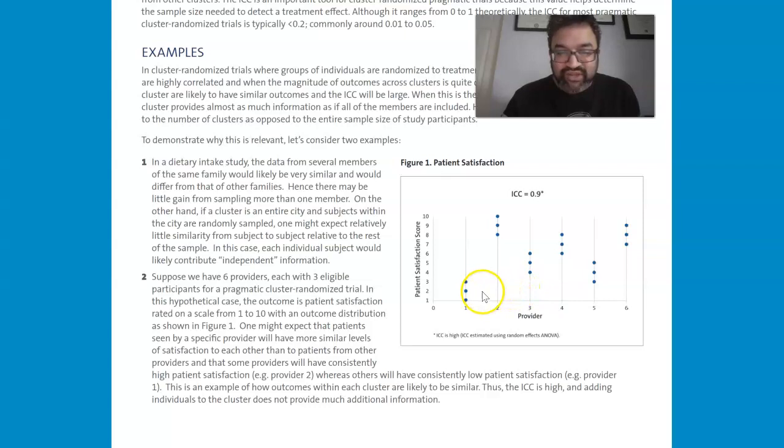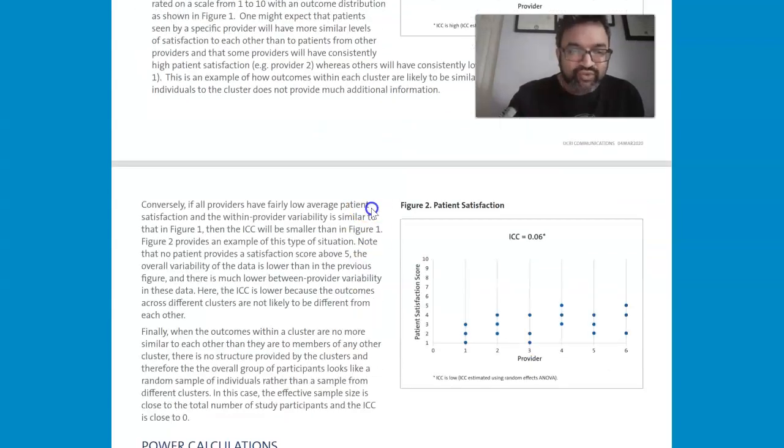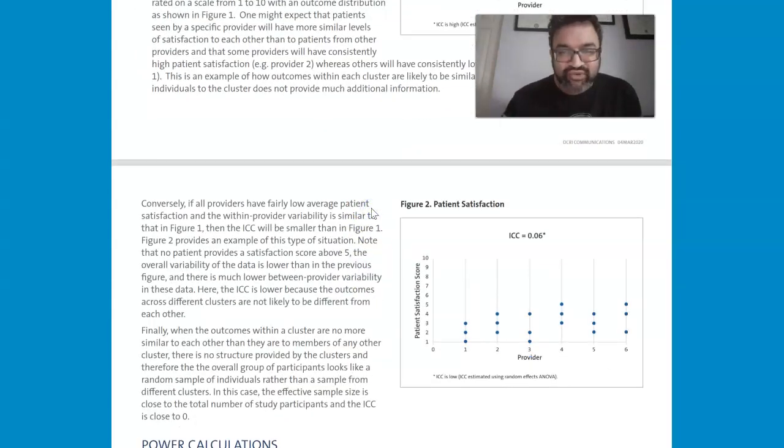So basically, what you have here is six providers, and I believe three measurements here. And so as you can see, there's variability here, and the intraclass correlation coefficient is pretty high.